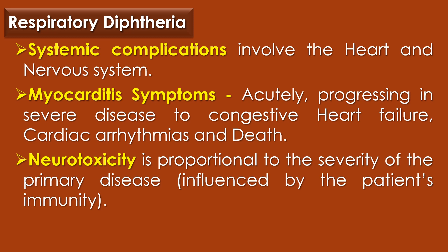Systemic complications in patients with severe disease primarily involve the heart and nervous system. Evidence of myocarditis can be detected in the majority of patients with diphtheria, typically developing within 1-2 weeks. Symptoms can progress acutely in severe disease to congestive heart failure, cardiac arrhythmia, and death. Neurotoxicity is proportional to the severity of the primary disease, which is influenced by the patient's immunity.